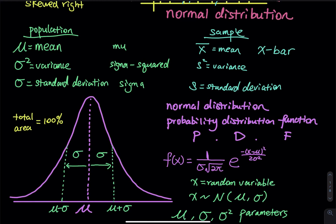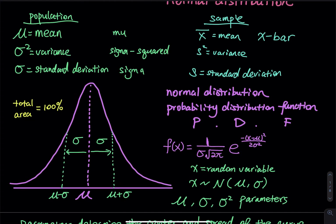Every time you hear normal distribution, one thing should pop up in your mind: the bell curve. In the bell curve, mu is right in the middle — the mean is the center. The sigma is the standard deviation that describes the spread of the curve: you add a standard deviation to the right and subtract one to the left to capture some area. The total area under the bell curve is 100%, just like uniform distribution.